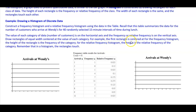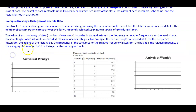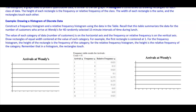We're going to draw rectangles of equal width centered at the value of each category. For example, the first rectangle is going to be centered at the value of 1. For the frequency histogram, the height of the rectangle is the frequency of the category. For the relative frequency histogram, the height is the relative frequency. Remember that in a histogram, the rectangles touch. So first, let's make sure we round our relative frequency to two decimal places.